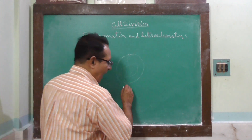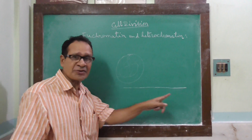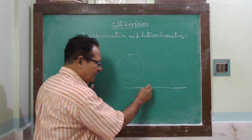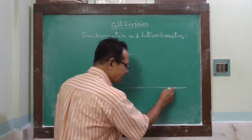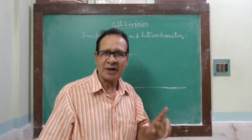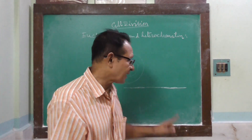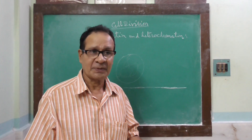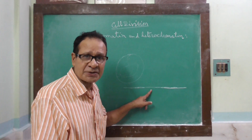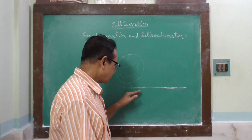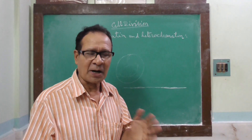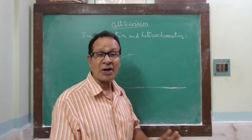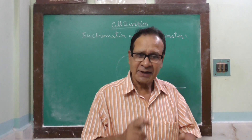it is observed that along the length of the chromatin thread, certain parts take deep stain and certain parts take light stain. These deep-stained parts are the heterochromatins, and the light-stained parts are the eucromatins. But during cell division, these euchromatin parts take deep stain, and the heterochromatin, although deep-stained, is lighter than the euchromatin part.